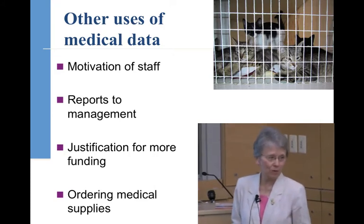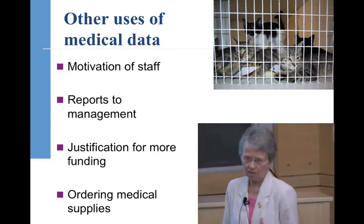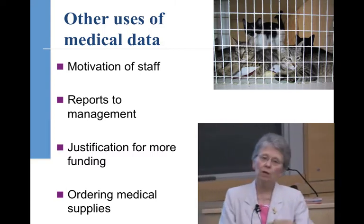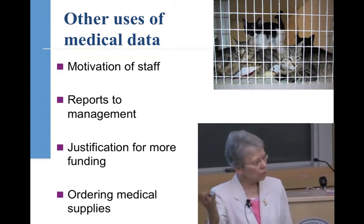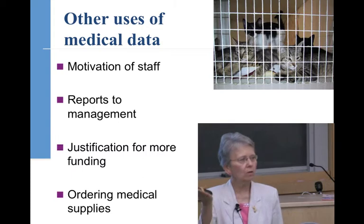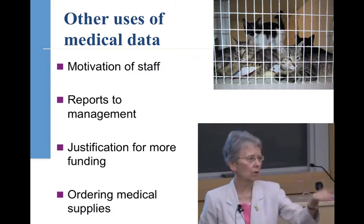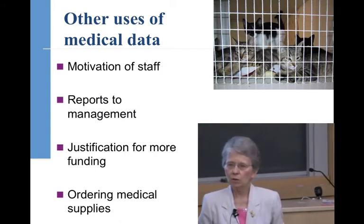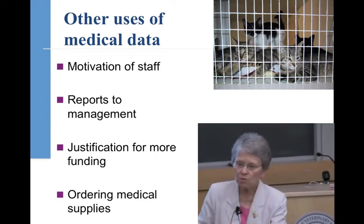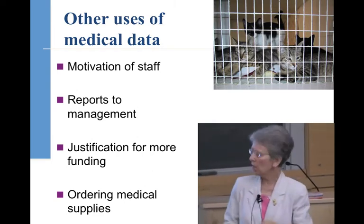Knowing how many animals you have to care for helps to order medical supplies. A lot of our funding agencies are now asking for data. If you're going to your board and it's faced with: do we put new siding on the building, or do we invest our resources in reducing disease in our dogs or cats? If you've got data to show them that 30% of our cats are getting sick in our care, or 20% of our dogs get canine respiratory disease complex — that's not acceptable. These animals are suffering. We're an organization about alleviating suffering, and if we can do something about minimizing that, that's part of our mission.